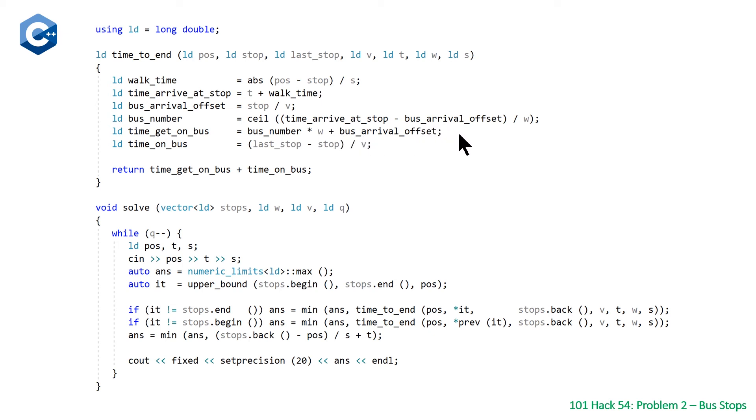Then we add back the bus arrival offset which we subtracted earlier here. Once we have this, this is the time that we will be getting on the bus. So walk time plus the time waiting equals the time to get on the bus—we basically combined our first two components. Then once we have these two values we just return them.